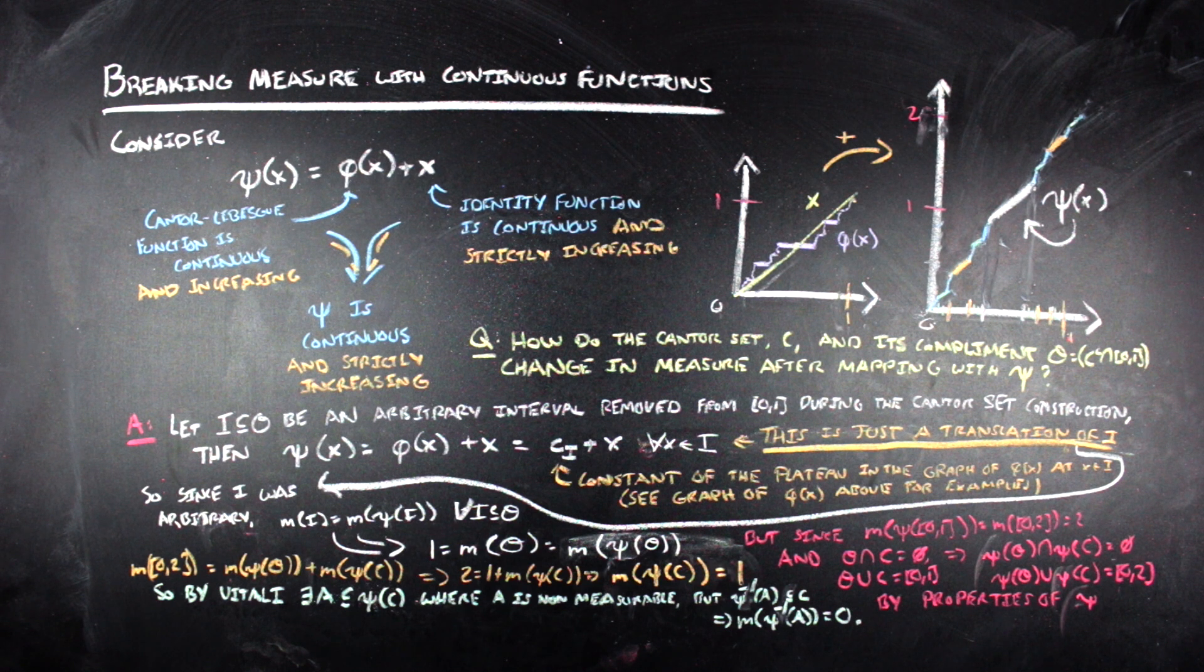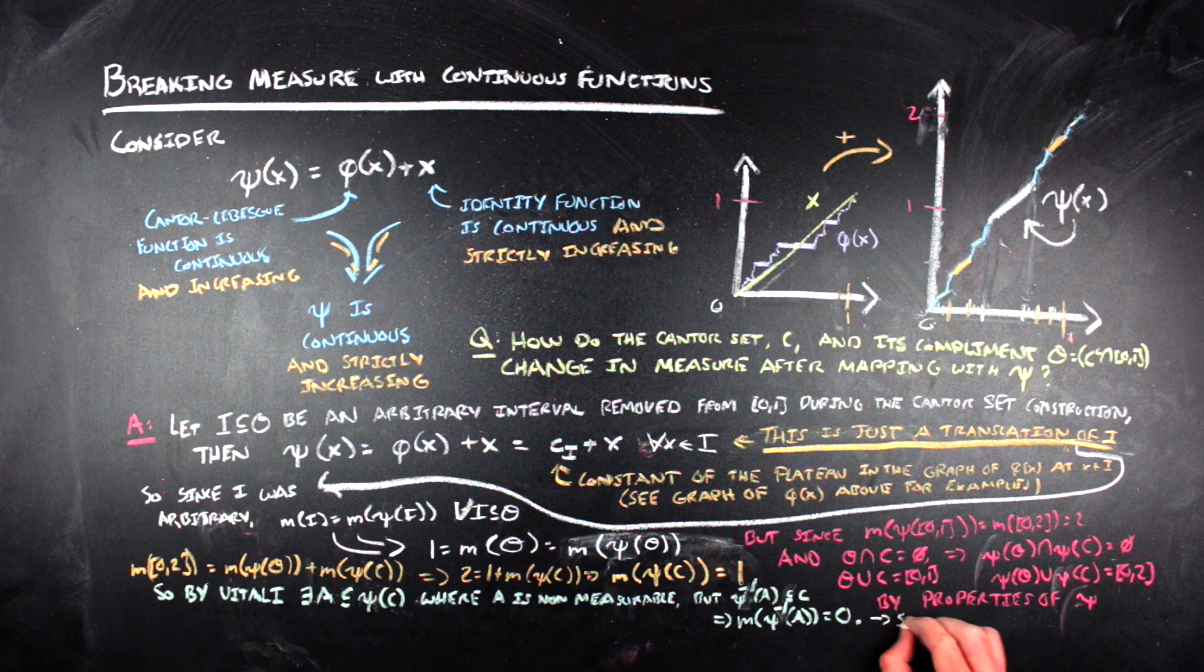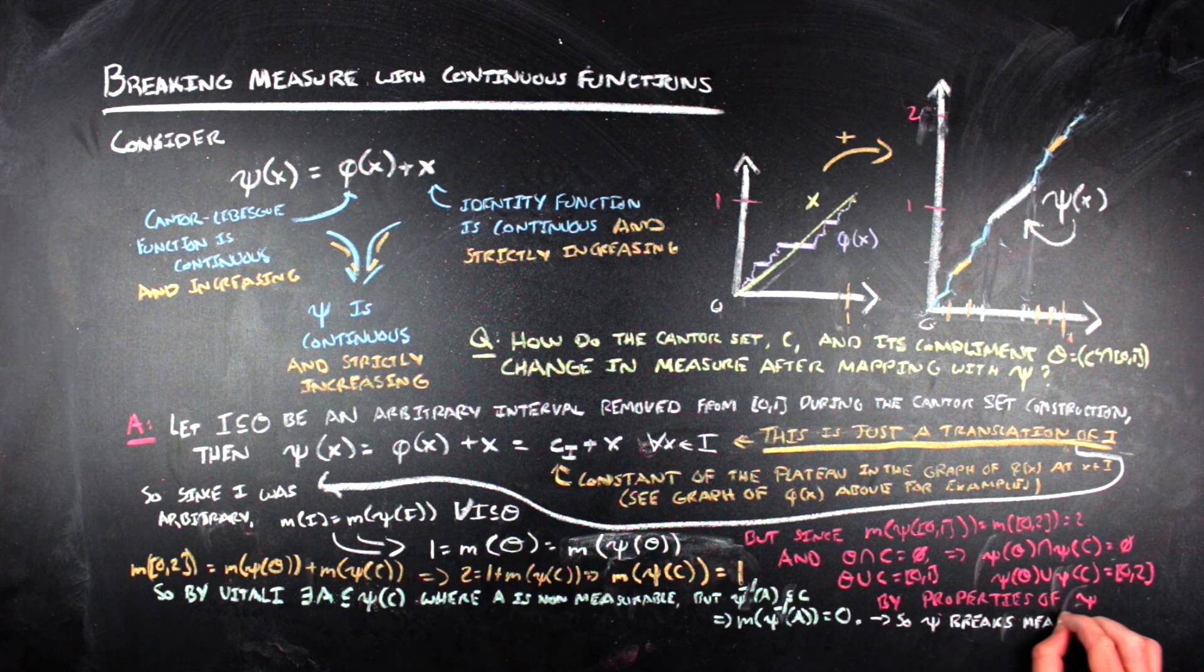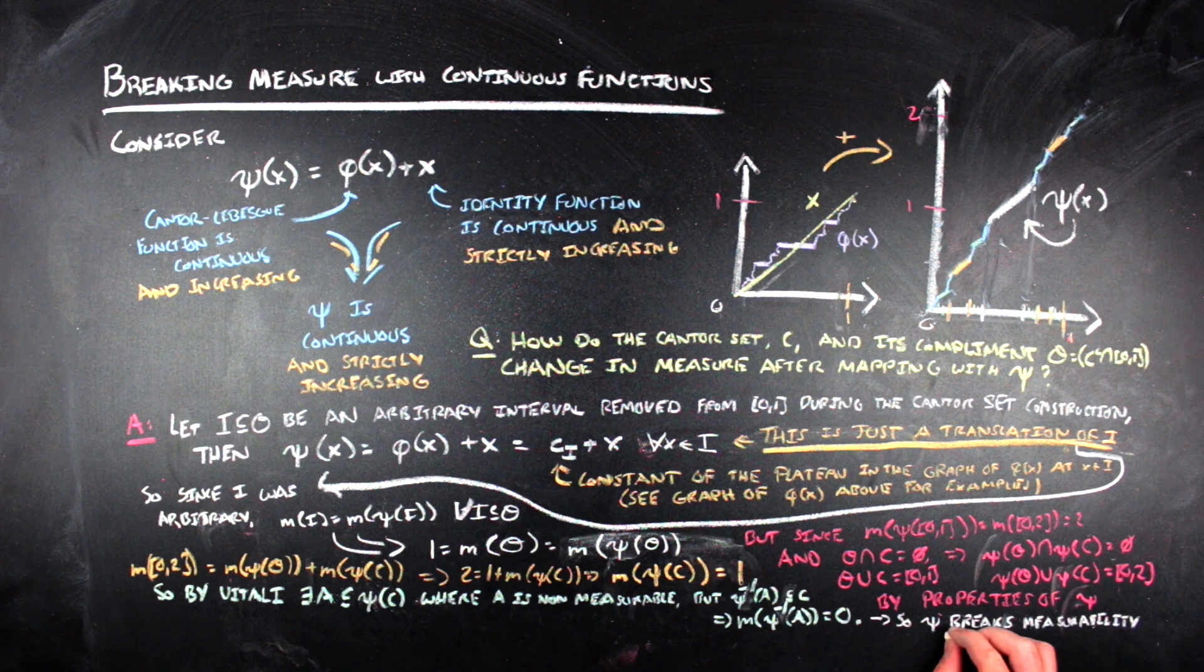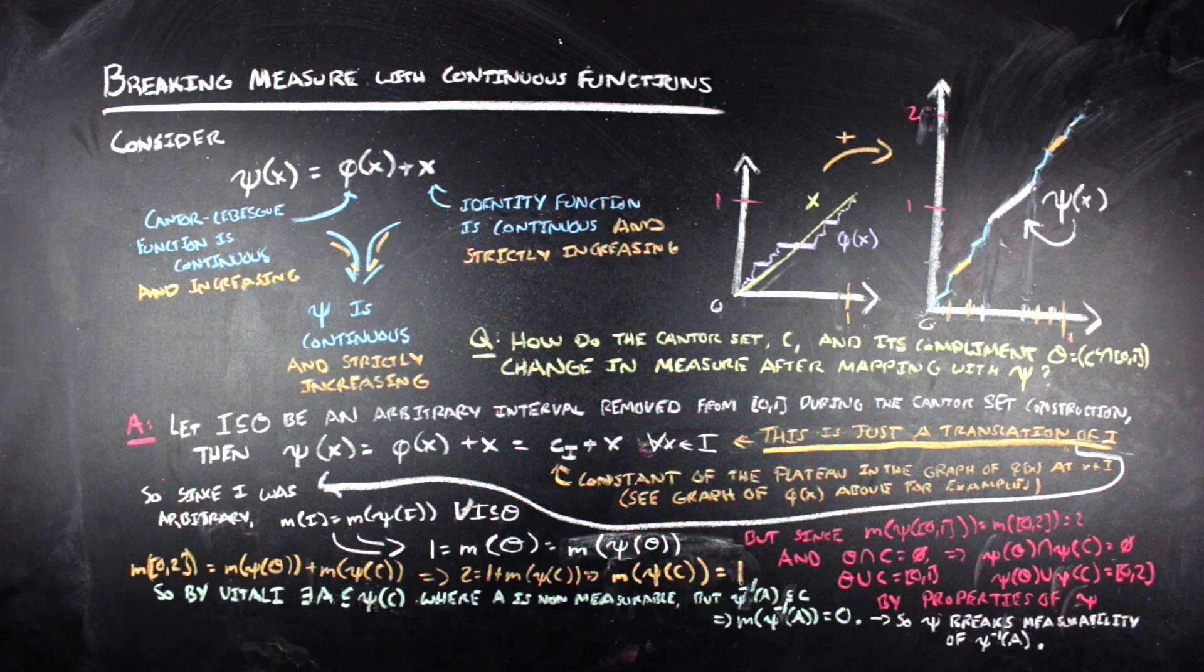And so even though our function has two very nice properties, it is continuous and it is strictly increasing, it still sends a set with measure to a set where measure is not an adequate descriptor of that set. So yeah, it's kind of weird. It's another reason why Vitali sets just make the world a weirder place if you decide to observe the axiom of choice when you're going about proving stuff.